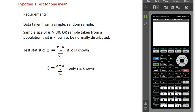If we are going to conduct a hypothesis test for one mean, the following requirements must be satisfied. Our sample data should be taken from a simple random sample, and that sample should be of size at least 30. Or the sample must be taken from a population that is known to be normally distributed. If sampling from a normally distributed population, any sample size is fine. Otherwise, we want a sample of at least 30.